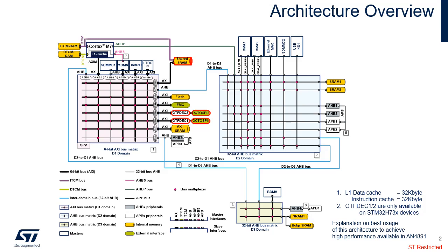Two OctoSPI interfaces support most of the serial external memories. The on-the-fly decryption engine, available in crypto devices STM32H7-3, allows the on-the-fly decryption of encrypted content that is then stored in external OctoSPI memories.